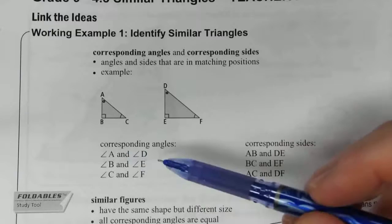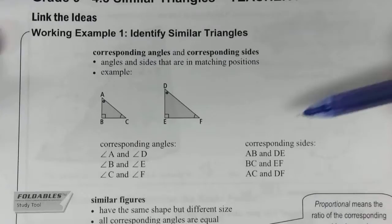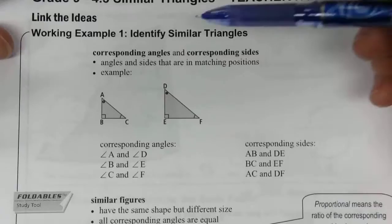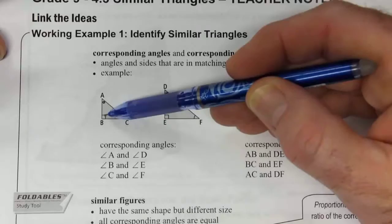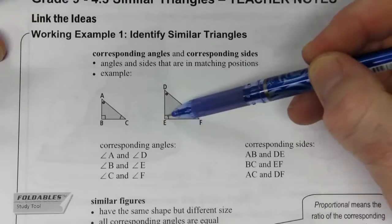Now corresponding sides are somewhat similar. Once you can identify which angles are the same so that your triangles are oriented the same way, you can compare sides. So side AB which goes from the circle to the square corresponds to side DE which again is circle to square.